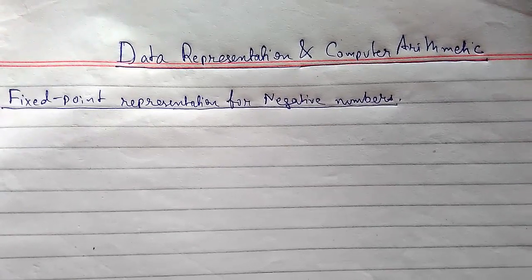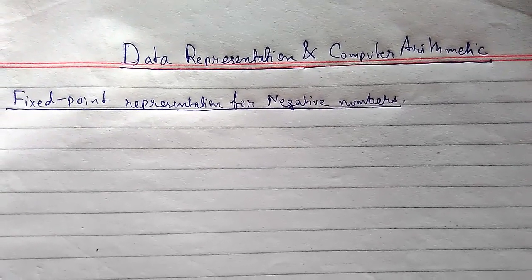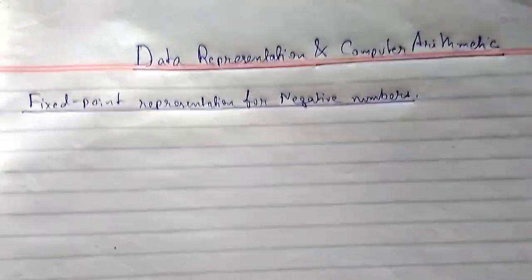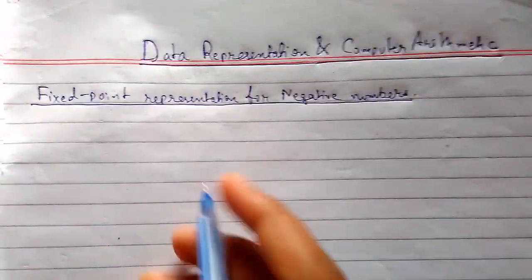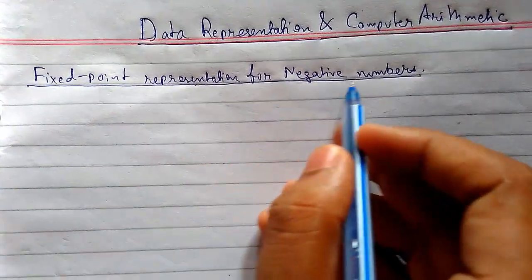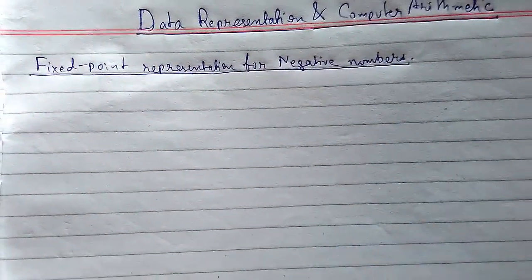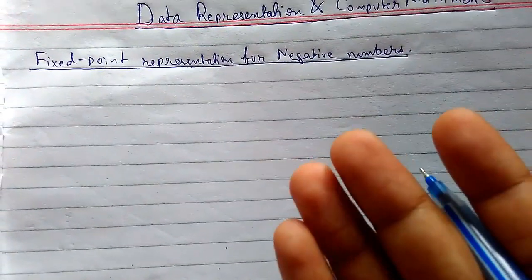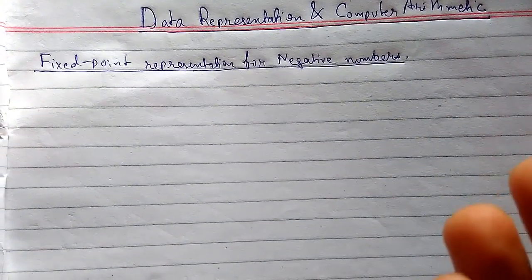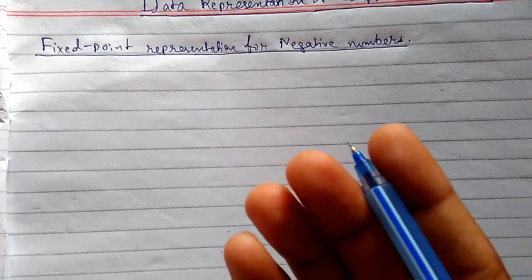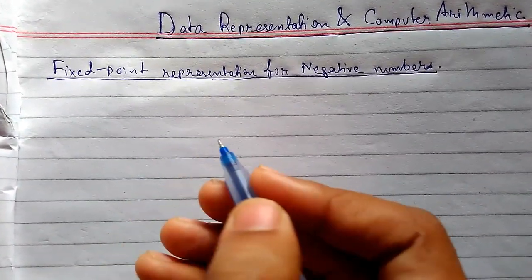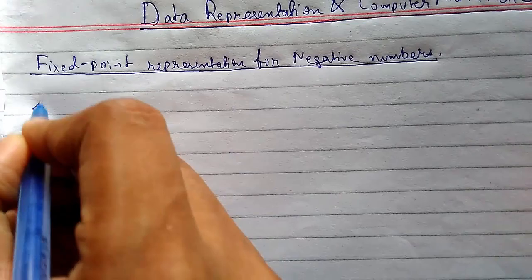Welcome back. Today we will be studying data representation and computer arithmetic, which is a part of computer organization. We will be studying fixed point representation for negative numbers. For a positive number there is a single representation, but a negative number has three representations.